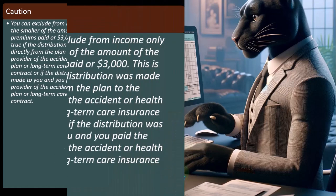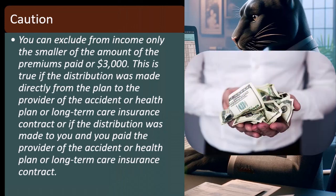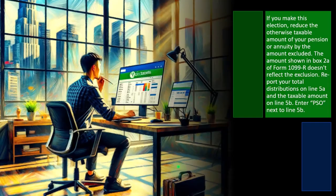Caution: You can exclude from income only the smaller of the amount of premiums paid or $3,000. This is true if the distribution was made directly from the plan to the provider of the accident or health plan or long-term care insurance contract, or if the distribution was made to you and you paid the provider of the accident or health plan or long-term contract.